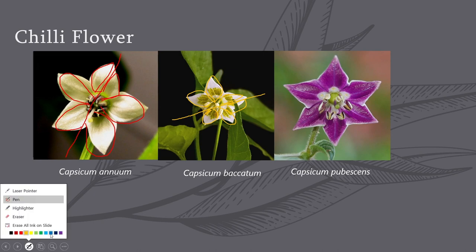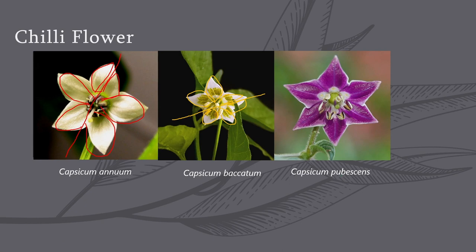Now let us see the third one — Capsicum pubescens. Again you can divide it like this, and you get three petals on the top and three petals on the bottom. Or you can divide it differently: you will get two full petals and two half petals on the left hand side, and two full petals and two half petals on the right hand side. Again you can divide it diagonally, getting three petals on each side. Similarly, you can get two full petals and one half petal on each side.